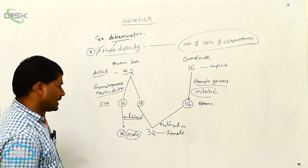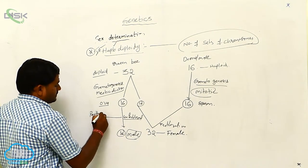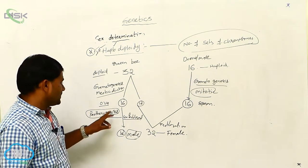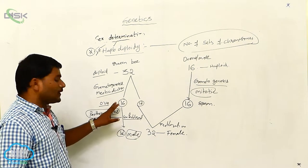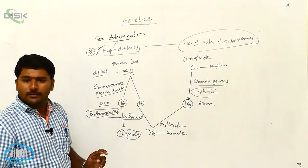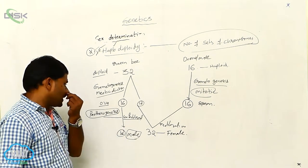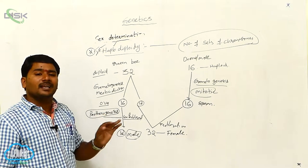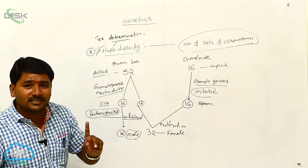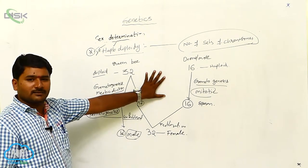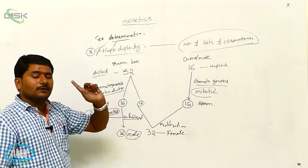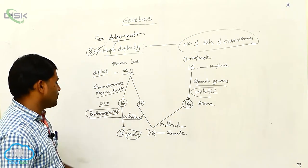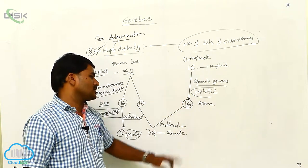This process is called parthenogenesis — the unfertilized ova develops into males by parthenogenesis. Here, neither sex chromosomes nor the ratio between chromosomes determines sex. What determines sex is the number of sets of chromosomes: if two sets are present, the organism is female; if one set is present, the organism is male.